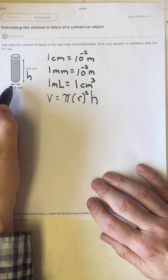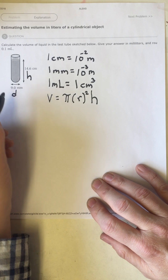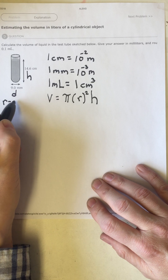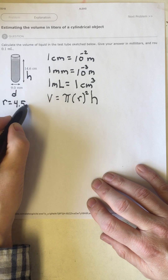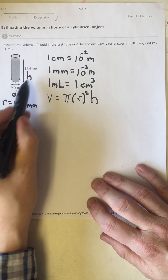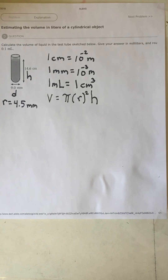The height is 14.6 centimeters and the diameter is 9.0 millimeters, so the radius would be one half of that, which is 4.5 millimeters. Notice that we have different units here.